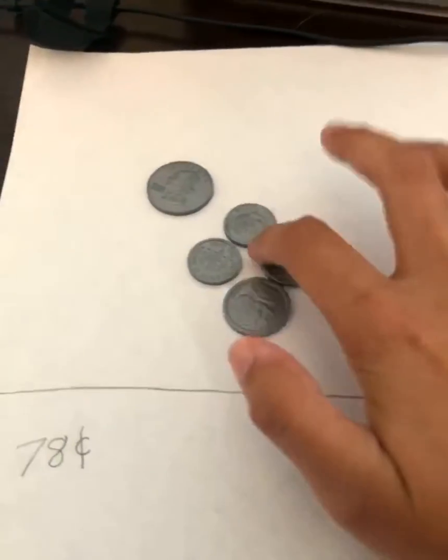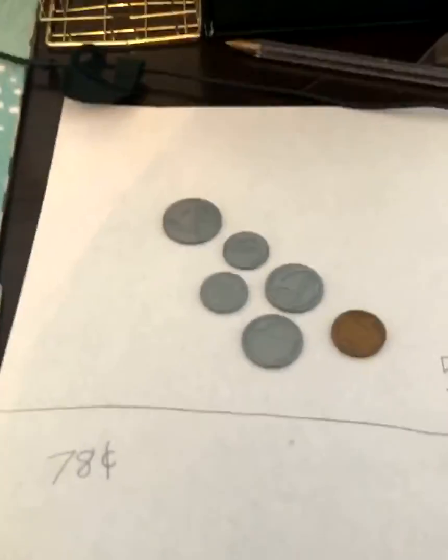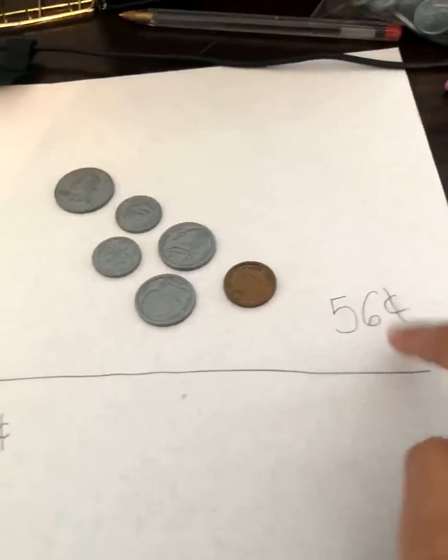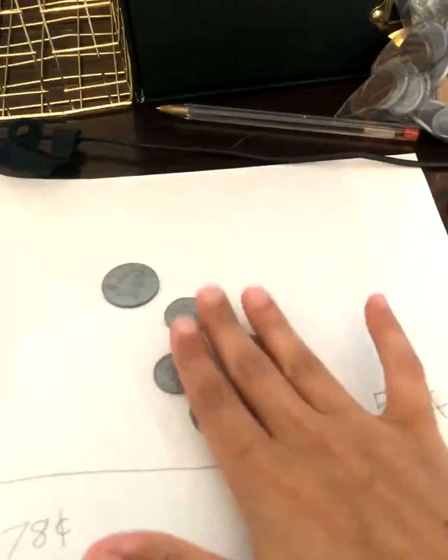So I've used one, two, three, four, five, six coins. That's a lot better than when we just did it for tens and ones. Okay, let's go ahead and try 78 next.